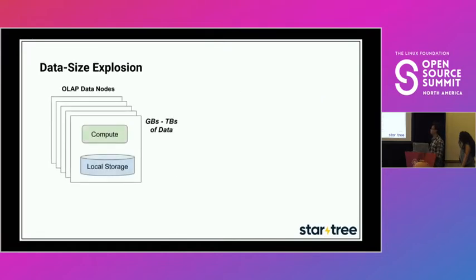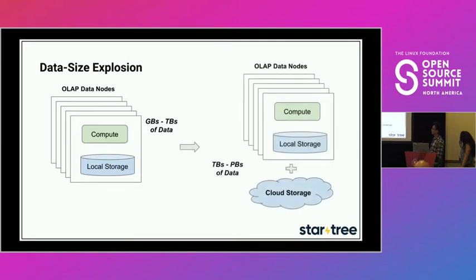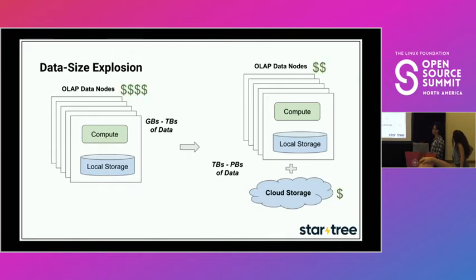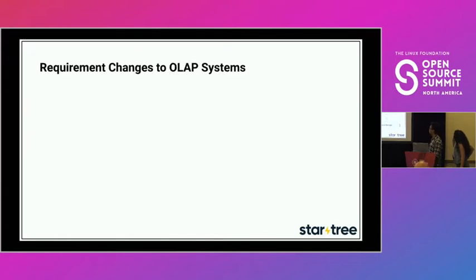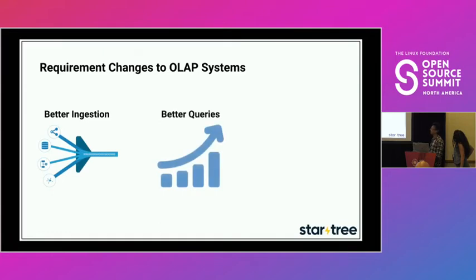Last is the data size explosion. Back in the hundreds of gigabytes or low terabytes range, it was easy to co-locate data with compute and horizontally scale the cluster. In the petabyte world, this is not cost-efficient — having many nodes sitting idle with compute resources just to satisfy local storage needs is wasteful. A great solution is to move cold or less-used data into cloud storage, which has cheap storage costs, while maintaining acceptable query latencies. This makes it much more cost-efficient.